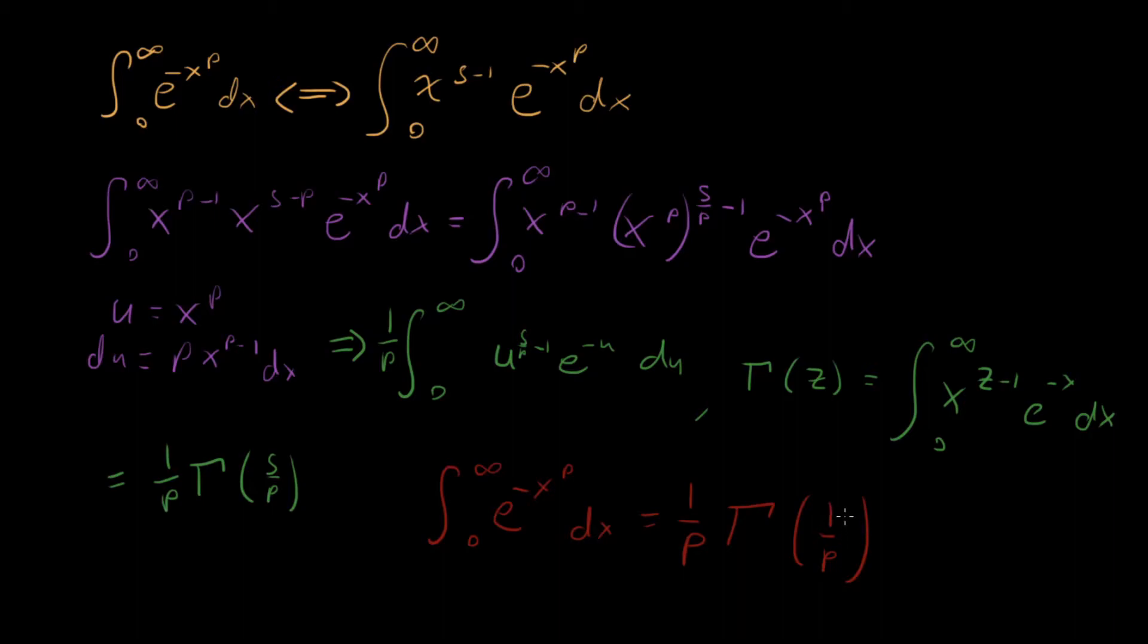And this is what sometimes people do, they use that property that gamma of n plus 1 is equal to n gamma of n, and then they rewrite this as gamma of 1 plus 1 over p. But we've done it. We've solved this super cool integral such that now we know the answer to e to the minus x to the fourth or e to the minus x to the sixth. We now have that answer.